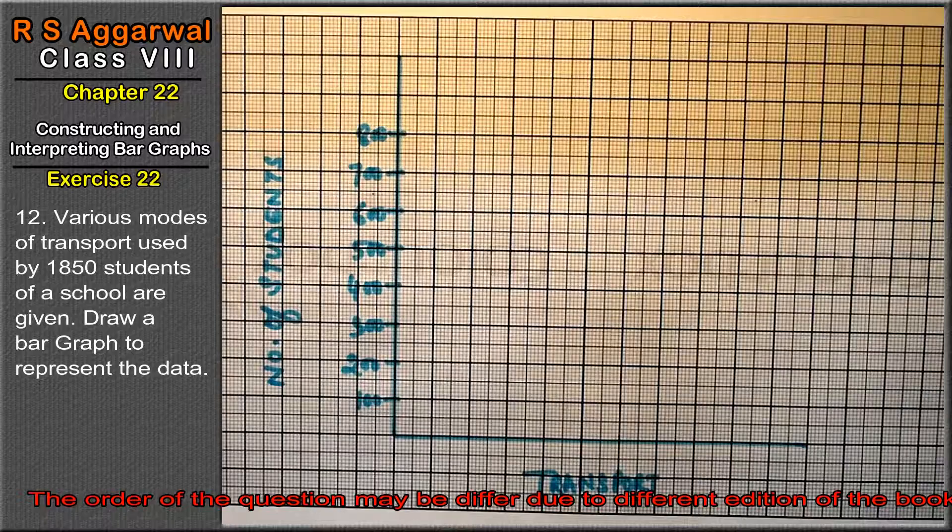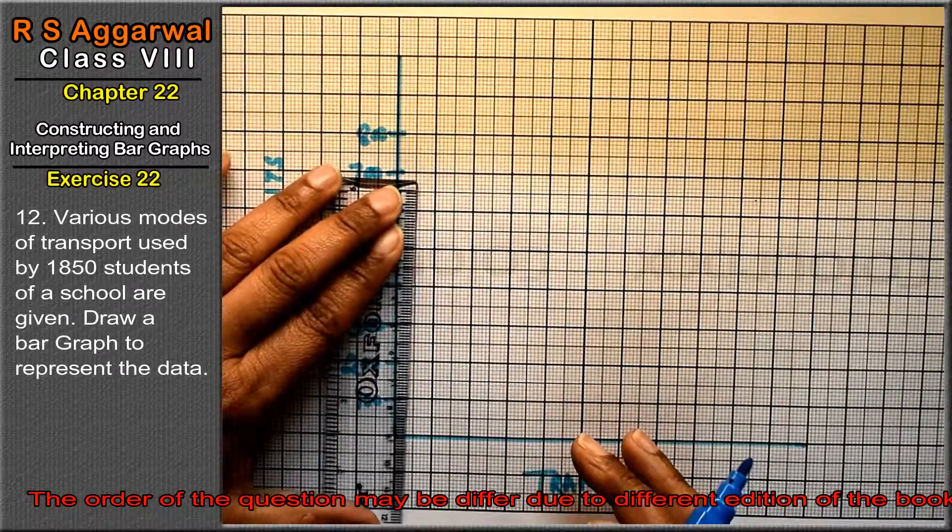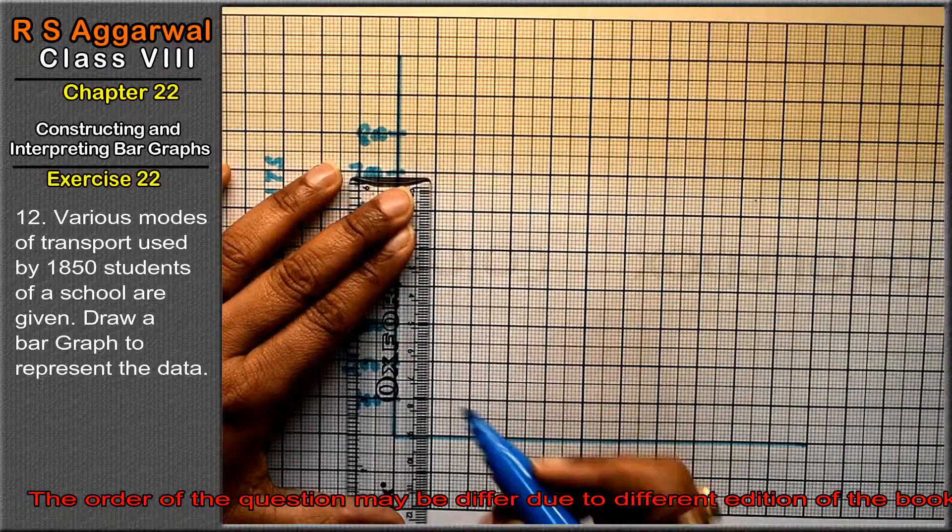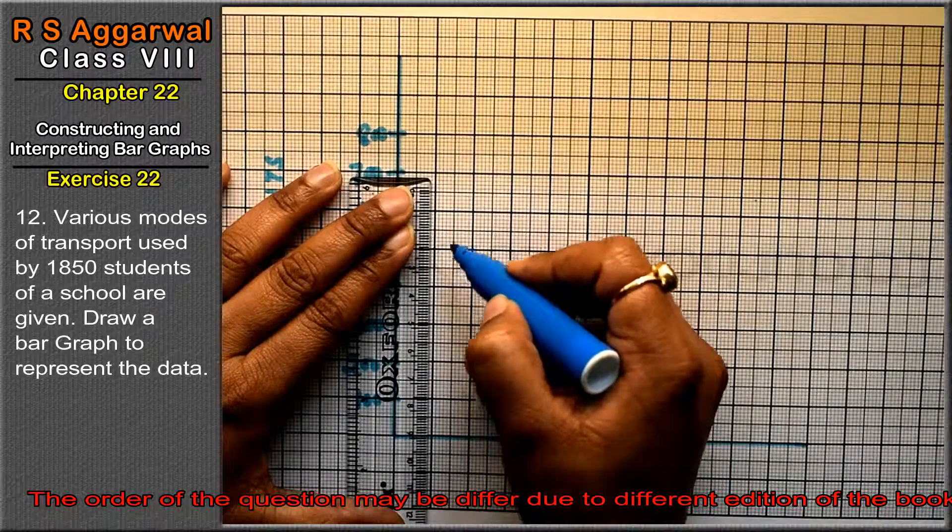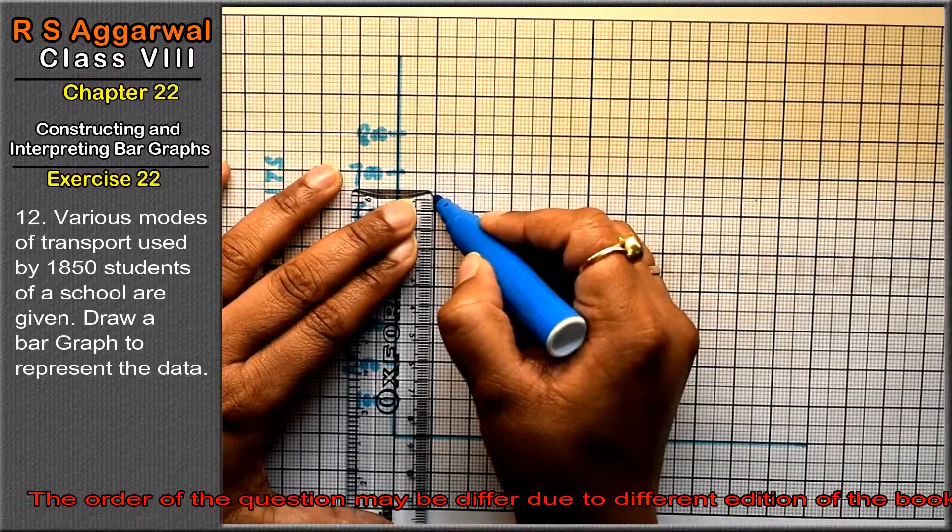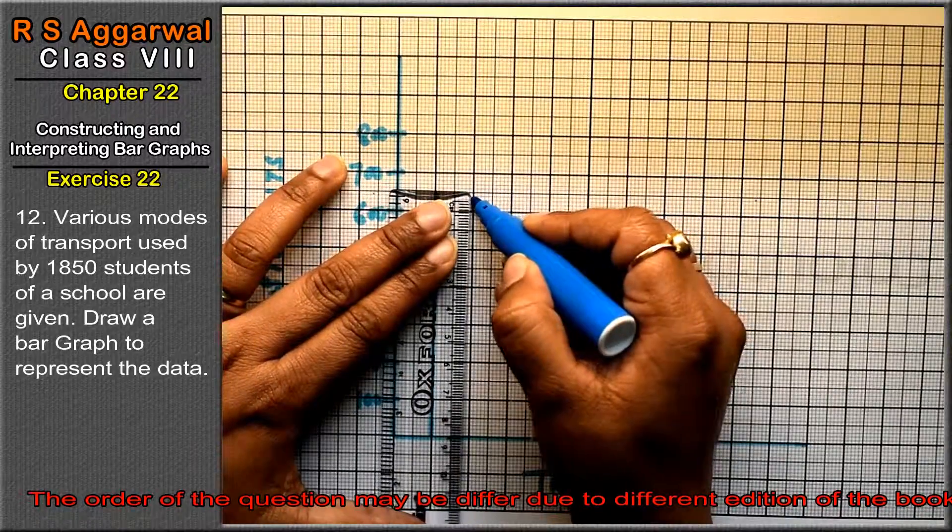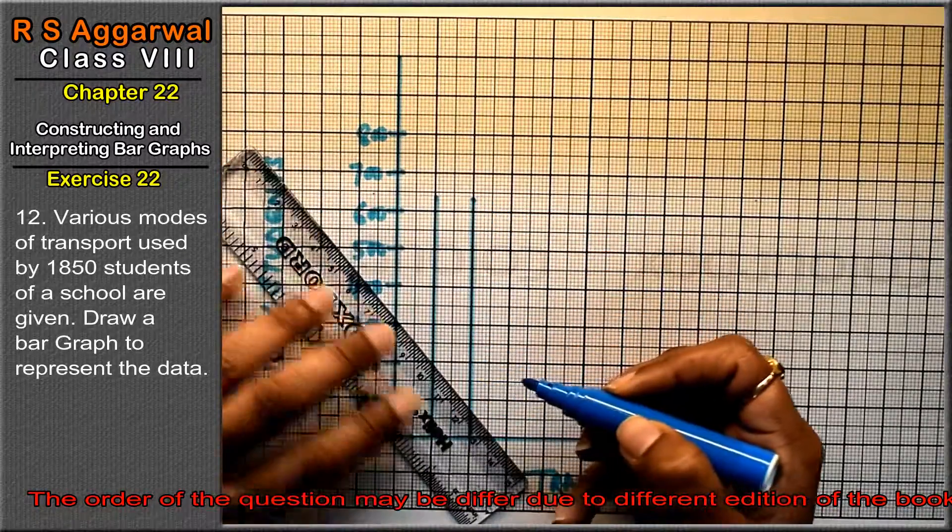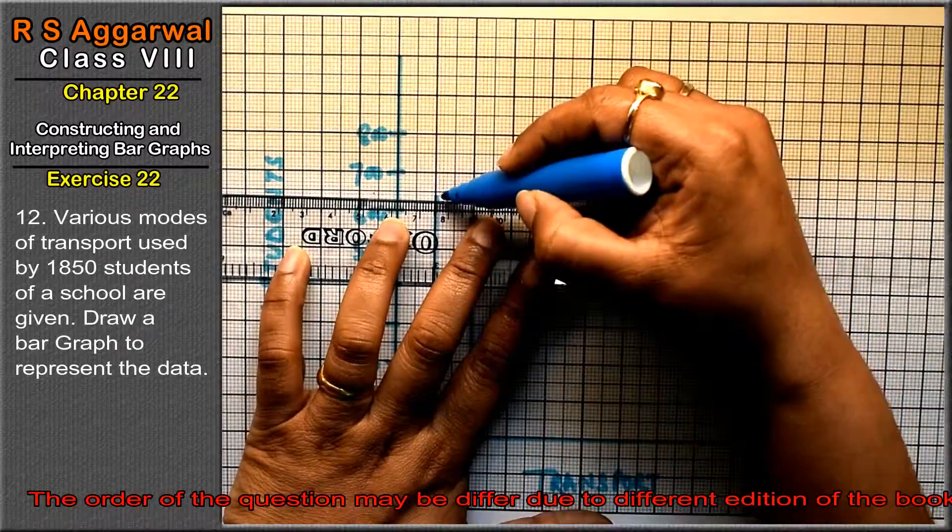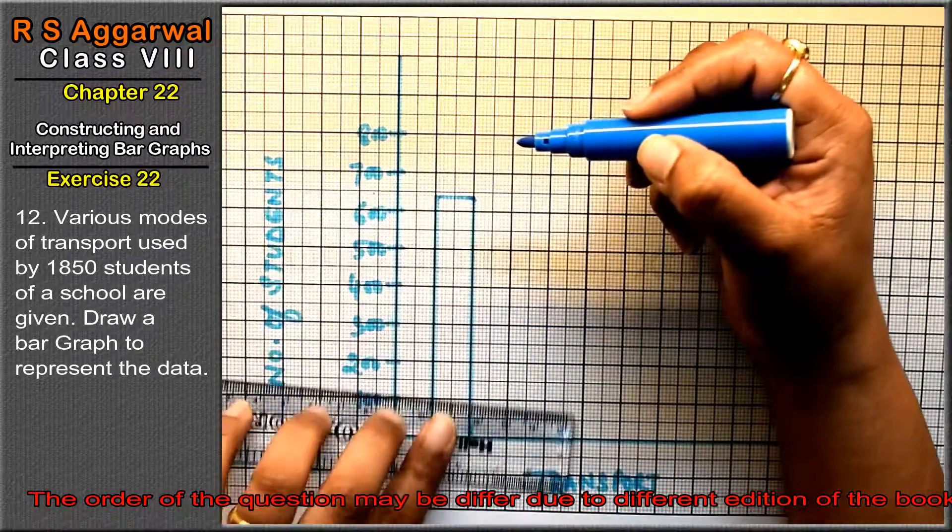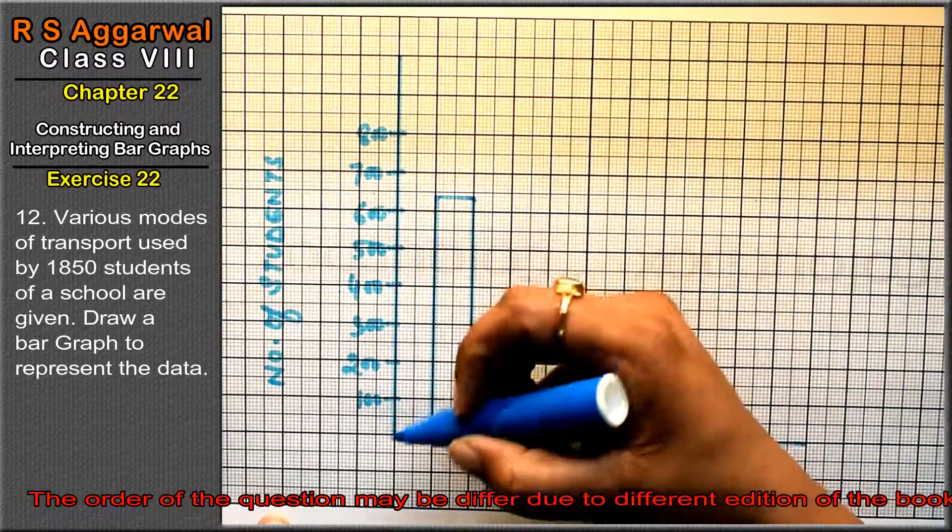First small division hamara ye 64 ka. That means 6: 1, 2, 3, 4, 5, 6 and 64 upar. Ye aa gaya hamara School bus.